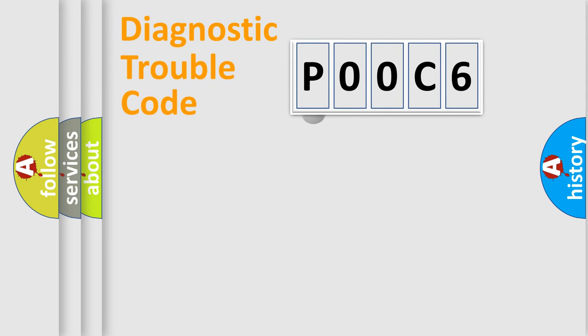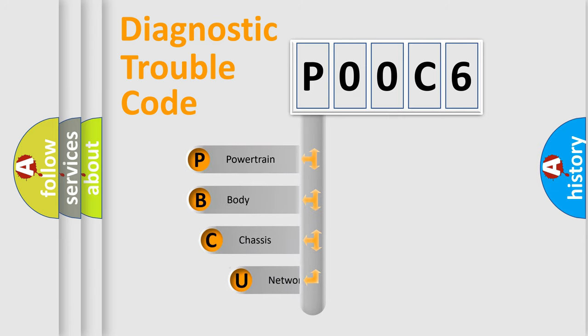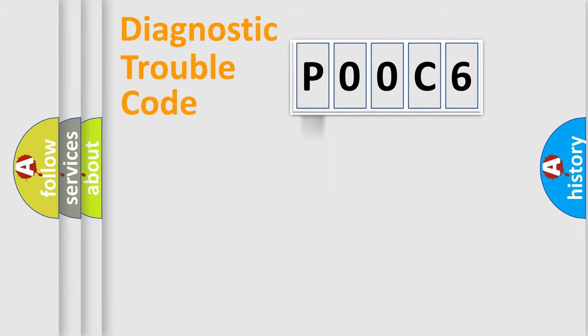First, let's look at the history of diagnostic fault code composition according to the OBD2 protocol, which is unified for all automakers since 2000. We divide the electric system of automobile into four basic units: Powertrain, Body, Chassis, Network.